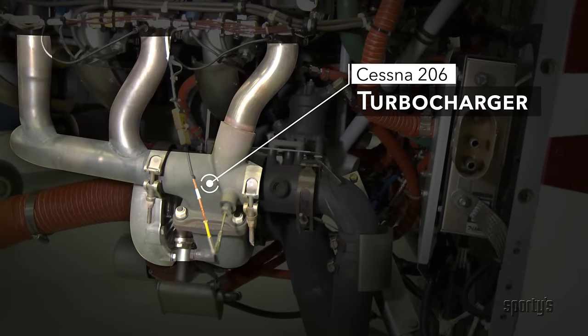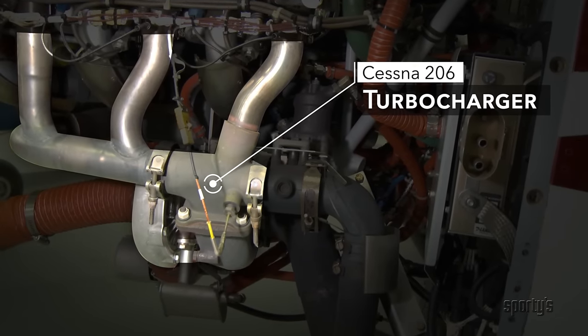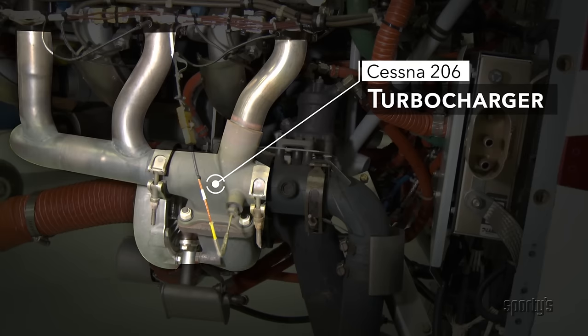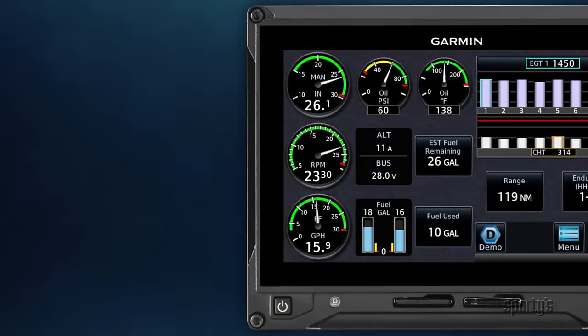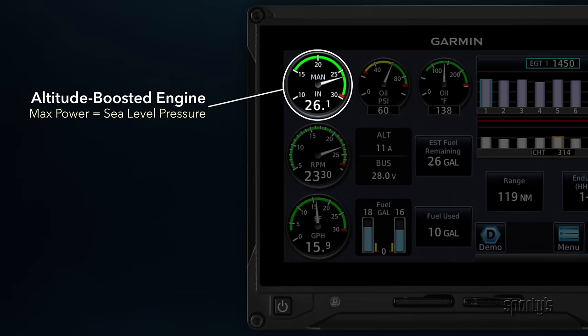The normalized engine may simply be a stock engine with a bolt-on turbocharger installed as a modification under a supplemental type certificate, or come that way right from the factory. In theory, any engine could be altitude boosted because power never exceeds the sea-level designed output of the naturally aspirated engine.